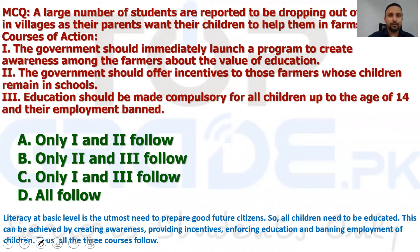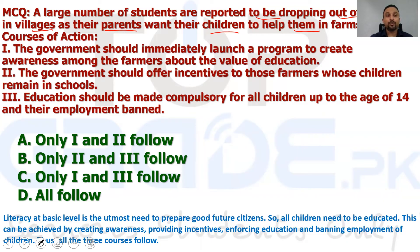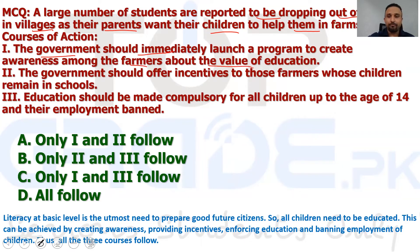There is a statement: a large number of students are reported to be dropping out of schools in villages, as their parents want their children to help them on the farms. So the problem is that children are leaving school to make money by helping on the farms. In this situation, what should the courses of action be? We have been given courses of action which we have to interpret.